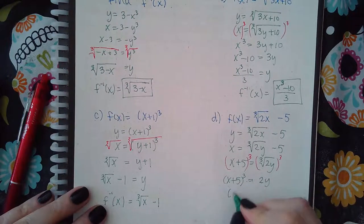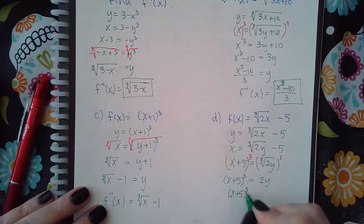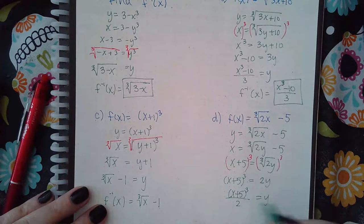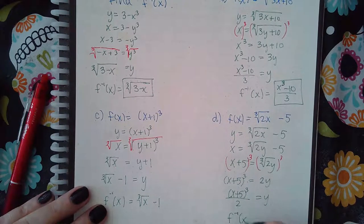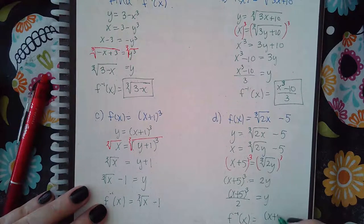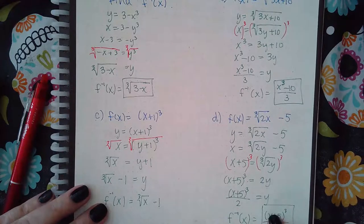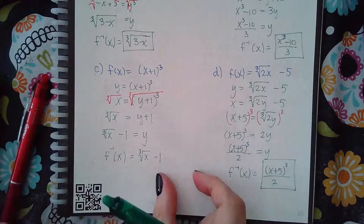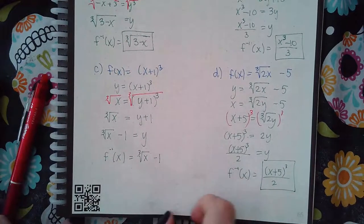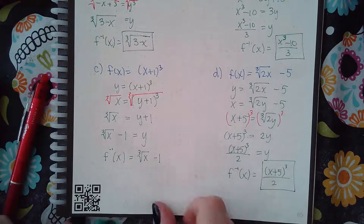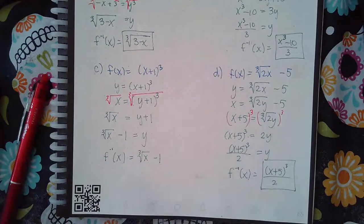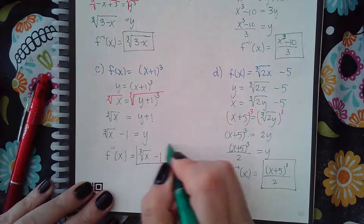And then divide by 2. So you have f inverse of x equals x plus 5 in parentheses over 2. You can leave it like that. You don't need to multiply this out, x plus 5 times x plus 5, figure that out and then times it by another x plus 5. You can just leave it like this and it will accept that as your answer.